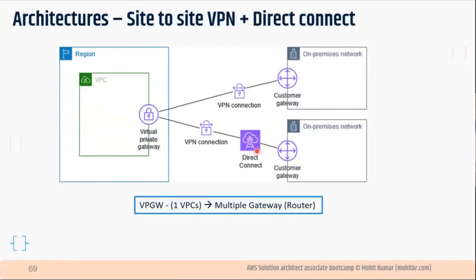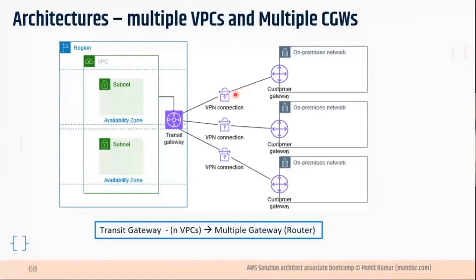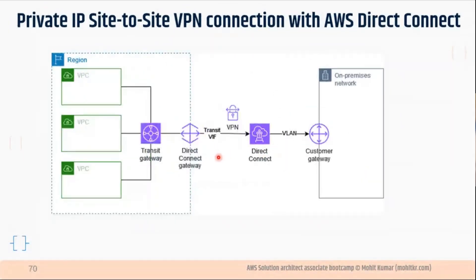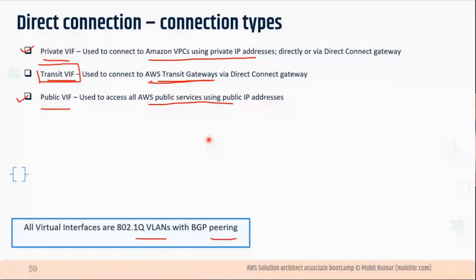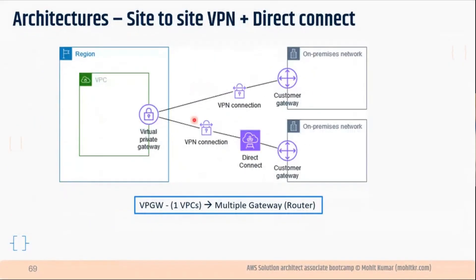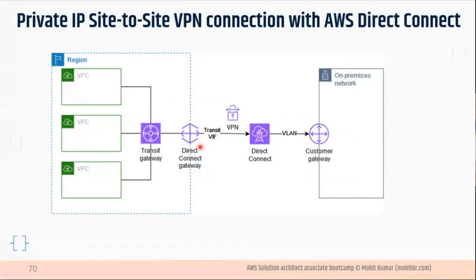You can also use a VPN connection over Direct Connect — it doesn't matter whether your underlying connection is the public internet or Direct Connect, you can run VPN on top of it. VPN over Direct Connect is a preferred choice if it appears as an answer option. When using Direct Connect with Transit Gateway, you will use a Transit VIF — always remember that connecting Transit Gateway with Direct Connect requires a Transit VIF.